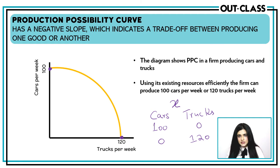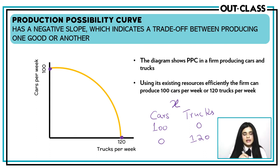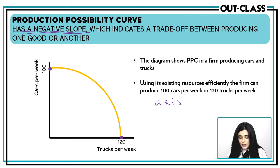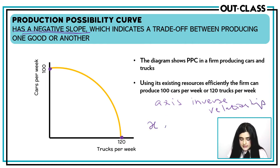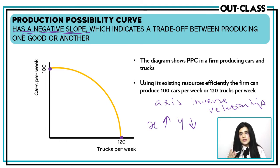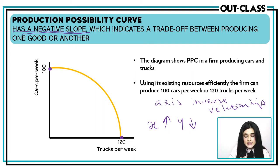Now let's talk about what this curve tells you. The first thing to note is that the PPC has a negative slope. When a curve has a negative slope, both axes have an inverse relationship — as the x-axis goes up, y goes down. So when you decide to make more cars, you will be making fewer trucks, and when you decide to make more trucks, you will be making fewer cars. The negative slope of the PPC shows us that we are incurring an opportunity cost.